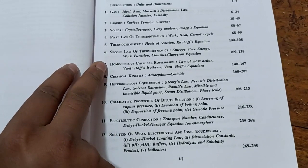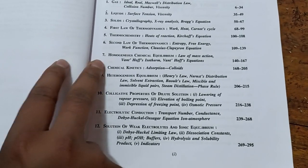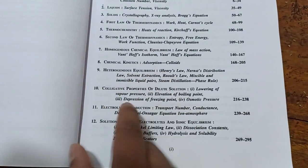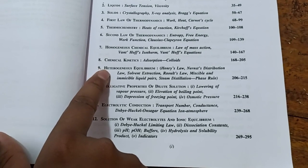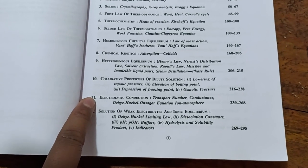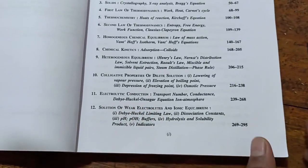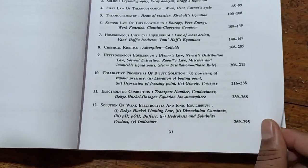Then equilibrium, chemical equilibrium, chemical kinetics is there, heterogeneous equilibrium where phase is also covered, colligative properties—a very important chapter—electrical conductance is a very interesting topic, electrolyte ionic equilibrium.